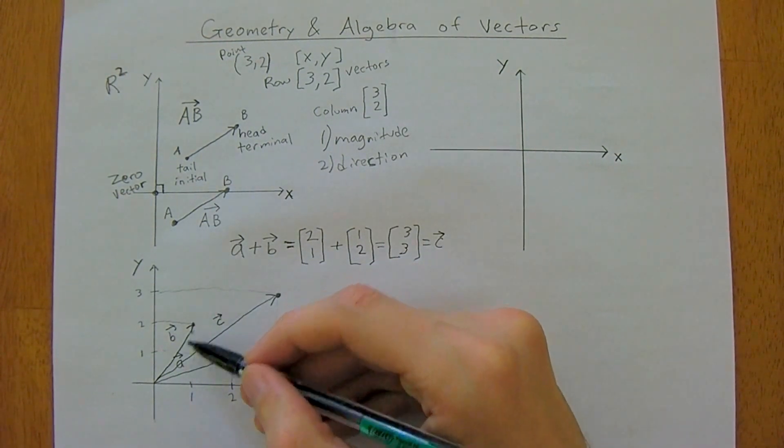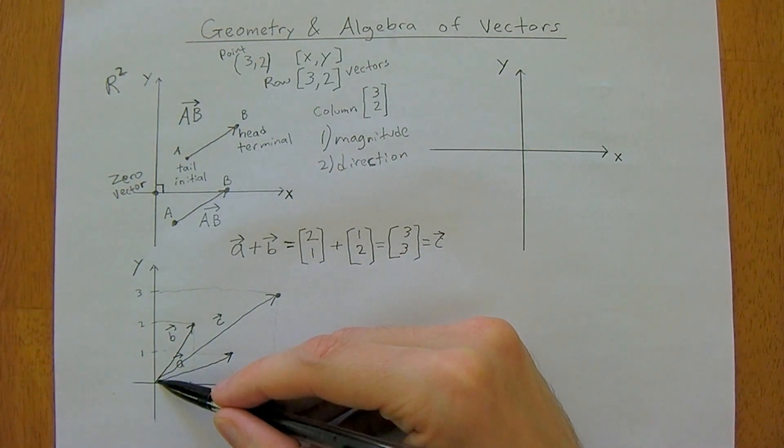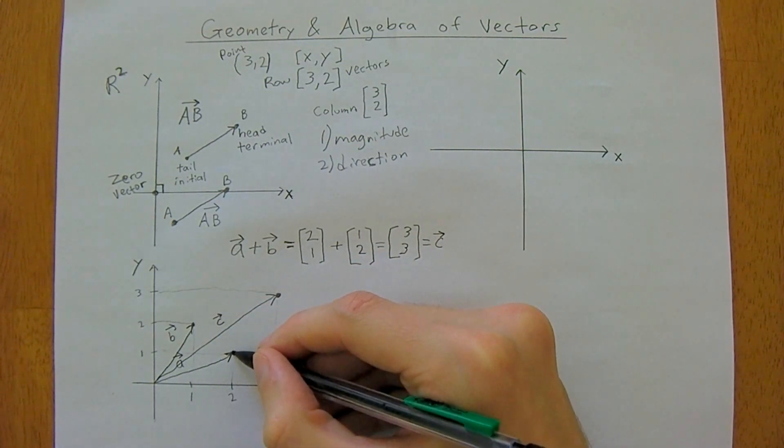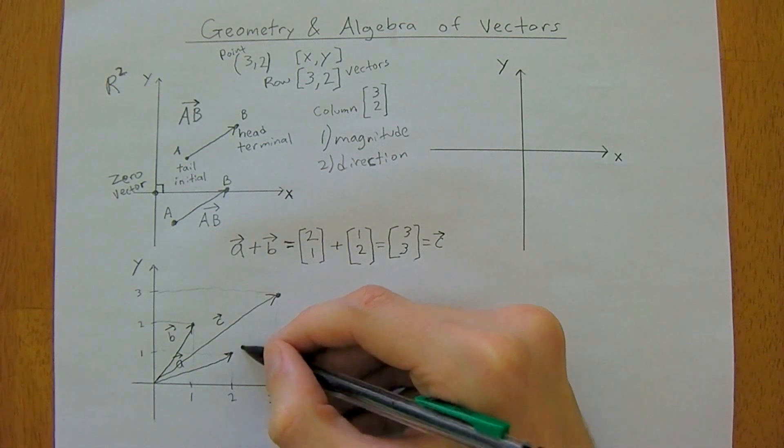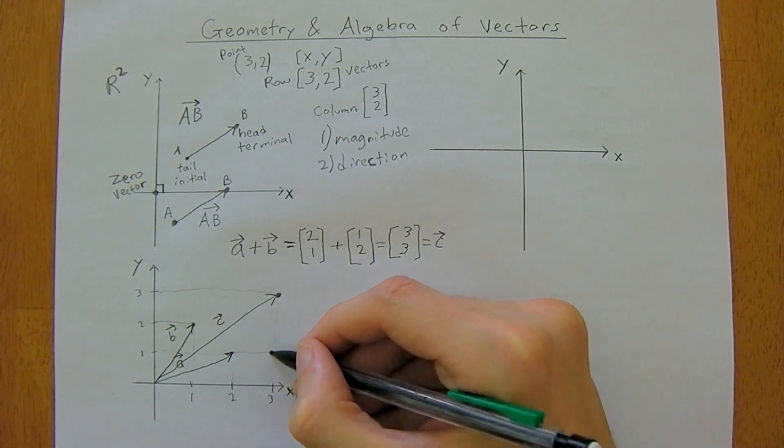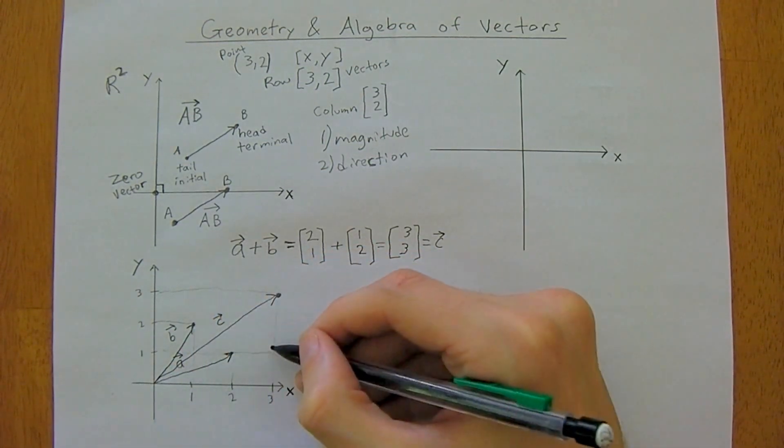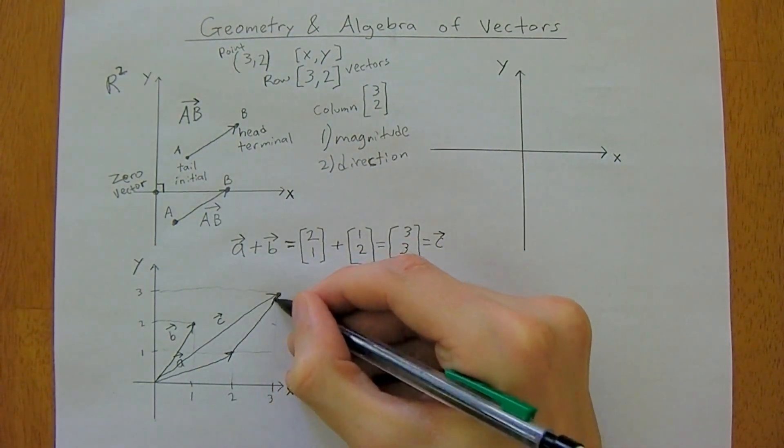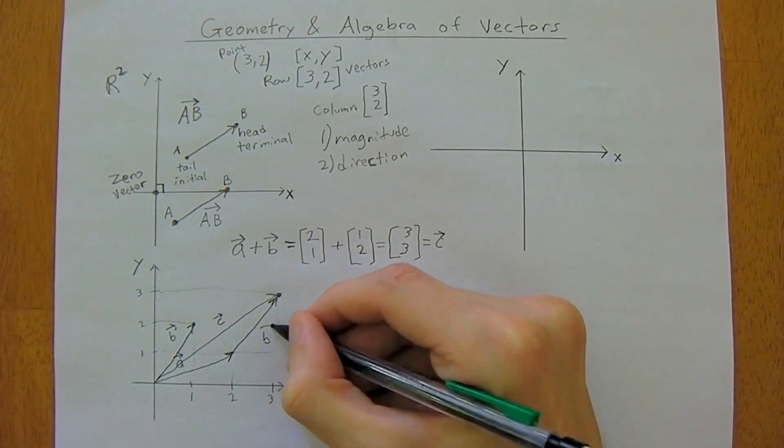It's important to realize that you could have done this from the graph too. If you'd taken the tail of b and you just translated it over to the head of a, literally just go over 1 and up 2, so over 1 and up 2, you would have ended up at the exact same point.